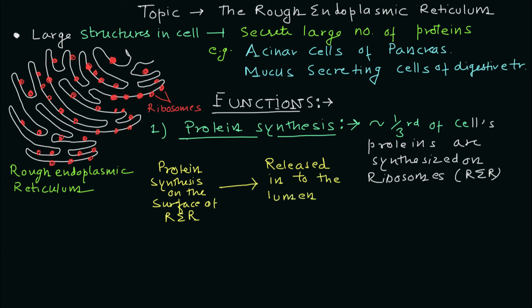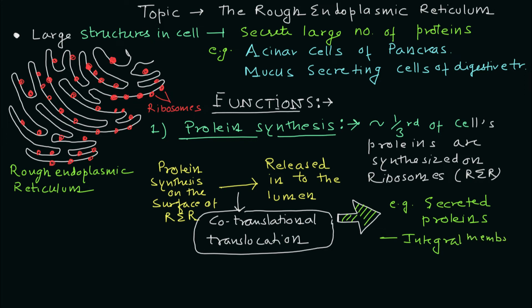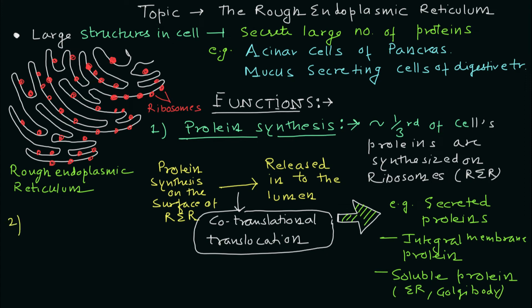You should remember this term: co-translational translocation. This is the process where proteins synthesized on the surface of the endoplasmic reticulum move into the lumen of the endoplasmic reticulum. Examples of proteins synthesized via this process include secreted proteins, integral membrane proteins that need to be incorporated into the membrane, and soluble proteins — such as proteins required in the lumen of the ER or the lumen of the Golgi body — which are synthesized on the surface and then move into the endoplasmic reticulum.